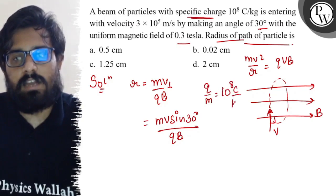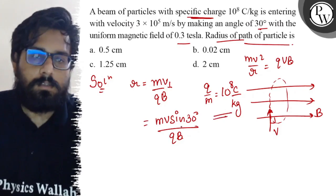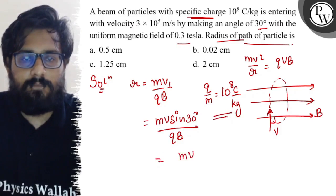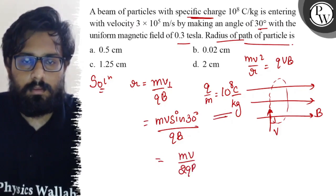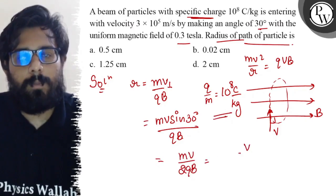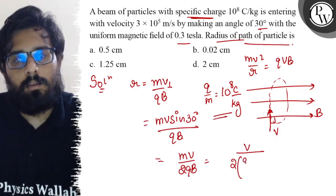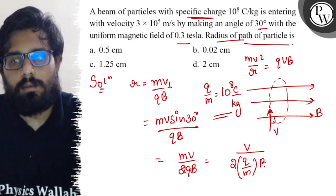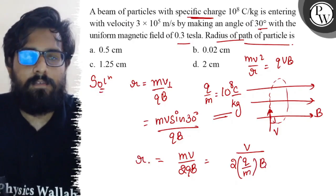Specific charge is q by m, so from here you can see it can be written as mv by 2qB, which equals v upon 2 times q by m times B. So this is the value of r. Let's solve this on the next page.